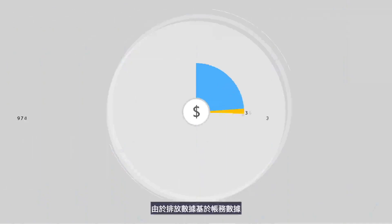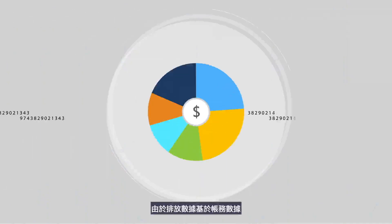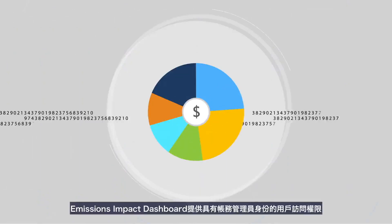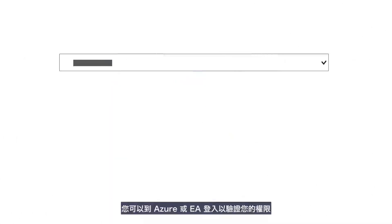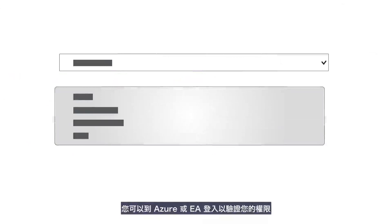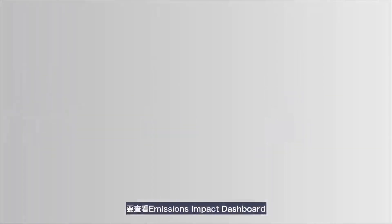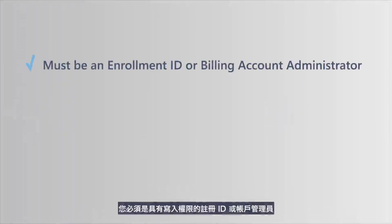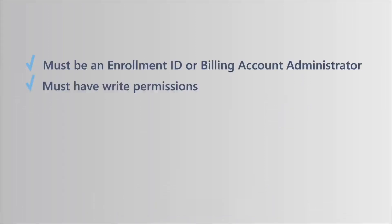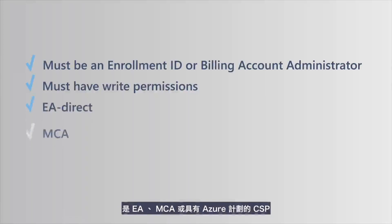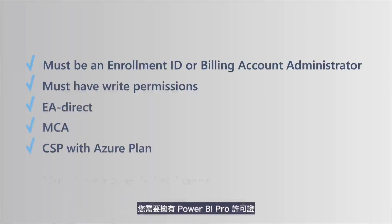Because emissions data is based on billing data, the Emissions Impact Dashboard provides access to users with billing admin rights. You can navigate to your Azure or EA portal to validate your permissions. To view the Emissions Impact Dashboard, you must be an Enrollment ID or Billing Account Administrator with the right permissions, who is either an EA Direct, MCA, or CSP with Azure Plan. And you'll need to have a Power BI Pro license.